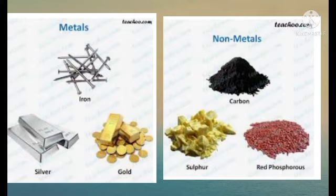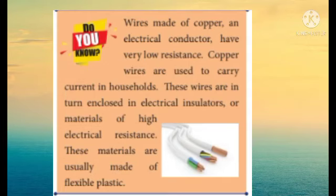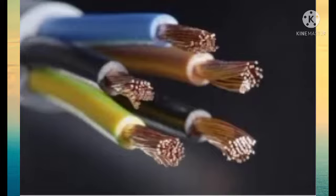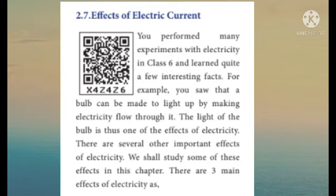Most metals are good conductors of electricity, while most non-metals are poor conductors of electricity. Wires made of copper, an electrical conductor, have very low resistance. Copper wires are used to carry current in households. These wires are in turn enclosed in electrical insulators — materials of high electrical resistance — which are usually made of flexible plastic.